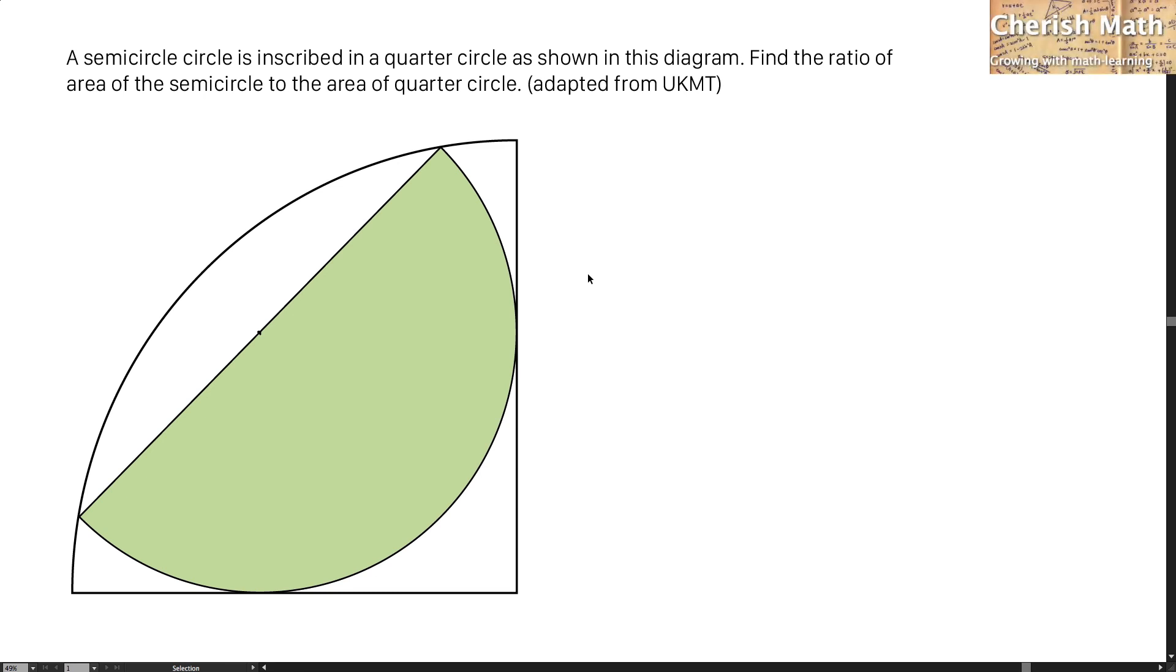Hi from Challenge Math, and this is the question. A semicircle is inscribed in a quarter circle as shown in this diagram. Find the ratio of area of the semicircle to the area of the quarter circle. This question is adapted from UKMT.